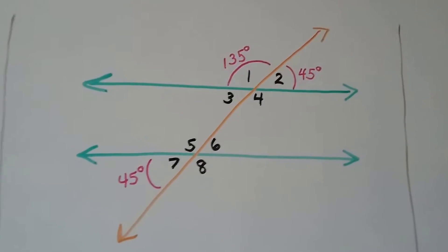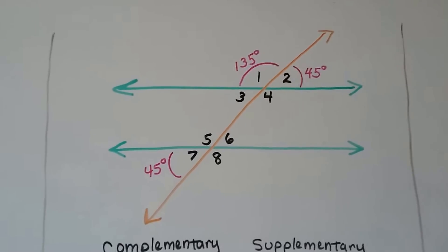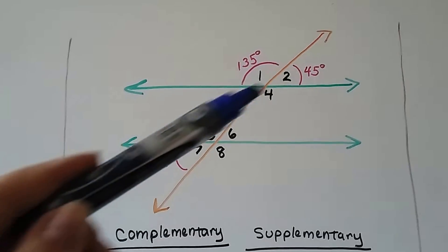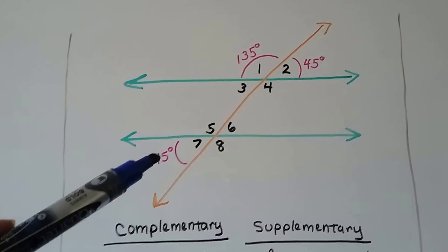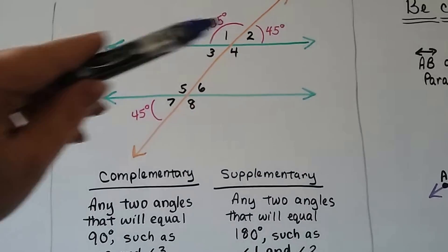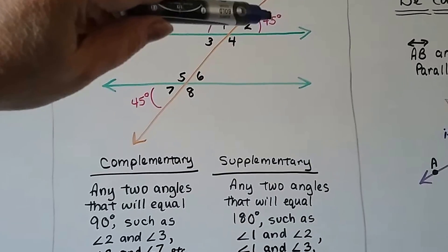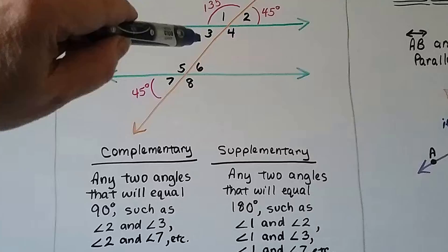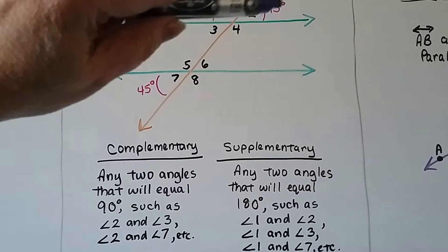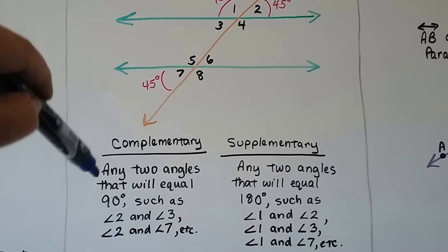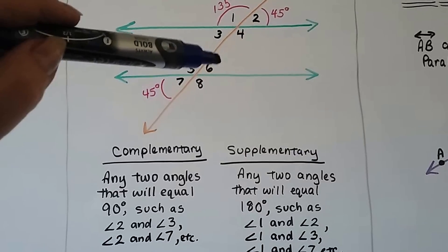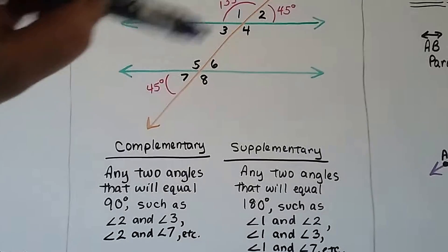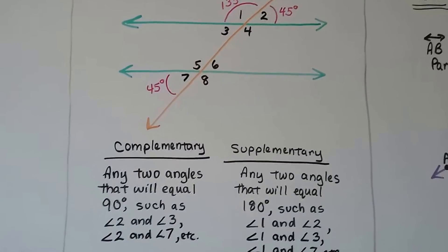Take a look at this one. We've got some green parallel lines cut by this orange transversal. If we know this is 135 degrees, then that has to be 45 degrees in order to total 180. And that means that one is also 45 degrees. Which of these angles are complementary? That's 45 degrees, which means angle 3 is a vertical angle — it also has to be 45 degrees. So these would be complementary to each other: 45 and 45 is 90. And that also means 6 and 7 would be complementary, and 2 and 7 would be complementary — even though they're not next to each other, 45 and 45 makes 90.